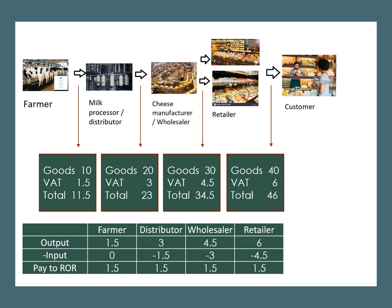This process continues until the final retailer. The retailer charges the customer $6 in output VAT. However, the retailer can claim $4.50 in input VAT, thus the net payment to the government is $1.50. Adding the payments of the four suppliers together, the total payments to the receiver of revenue amounts to $6 Namibian dollars. This is equivalent to what the final customer pays the retailer in VAT.